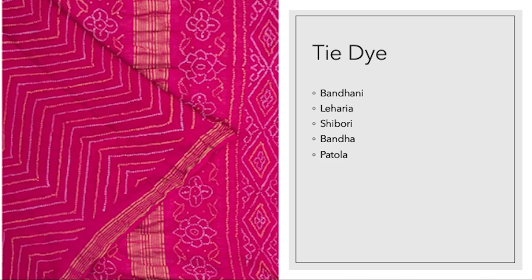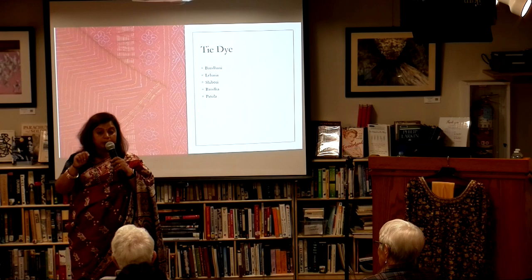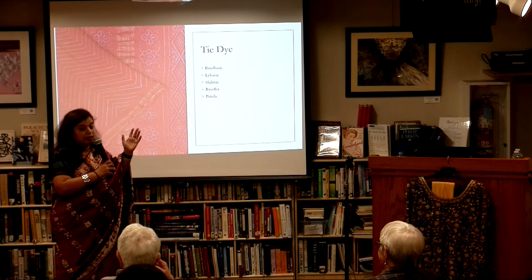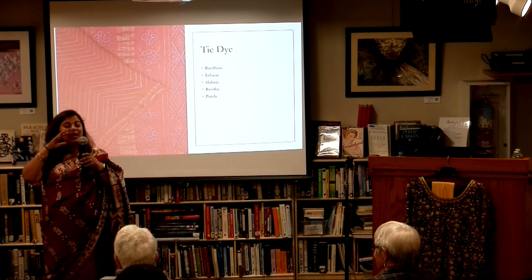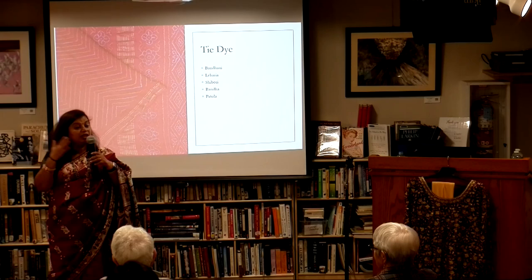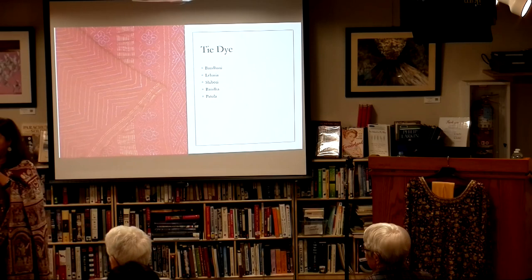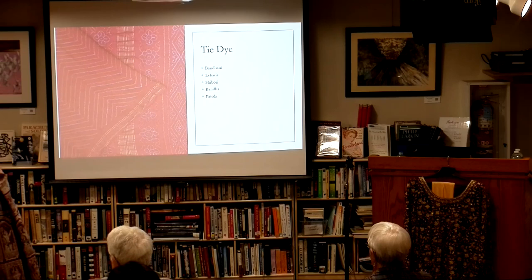Just as there were outside influences on weaving, there were also influences on tie-dye techniques. This saree is made with the Japanese technique called shibori. Then there is the bandha technique, where instead of tying the fabric they tie the individual fibers before the saree is woven. Patola is another very expensive saree — you'd break the bank trying to buy one — where literally every single fiber is tied in both warp and weft directions and then woven to create the pattern.